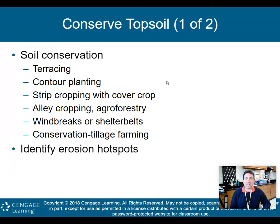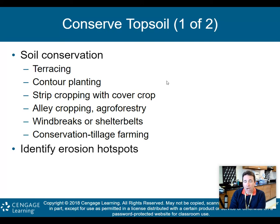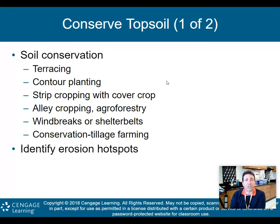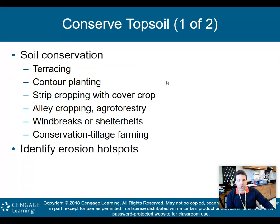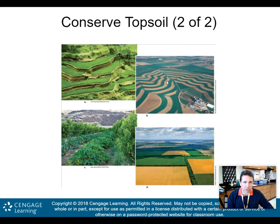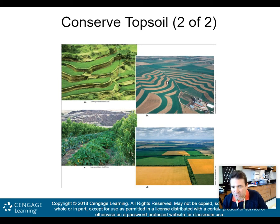The first thing we can do is conserve topsoil. Soil conservation is very important, and there are ways to farm your land while also conserving soil. These include terracing, contour planting, strip cropping with a cover crop, alley cropping or agroforestry, windbreaks or shelterbelts, conservative tillage farming, and identifying erosion hotspots to deal with them.